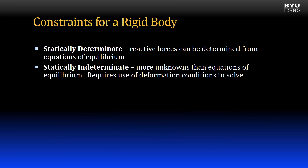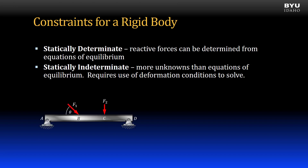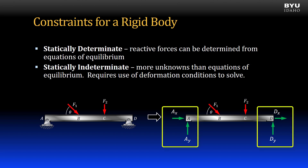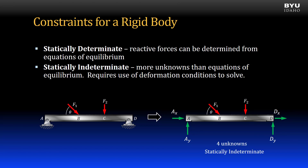Now let's talk about statically indeterminate bodies and structures. Statically indeterminate means that there are more unknowns than there are equations of equilibrium. Here is an example: this beam is supported by pins on both ends. Here is a free body diagram. Note that there are four unknown reaction forces, so it is statically indeterminate.